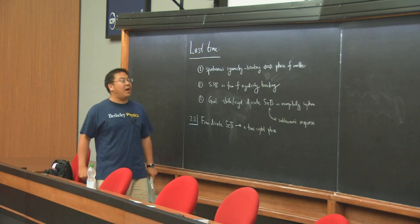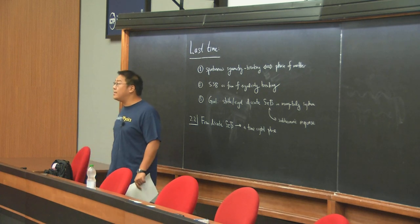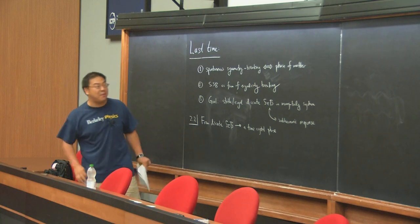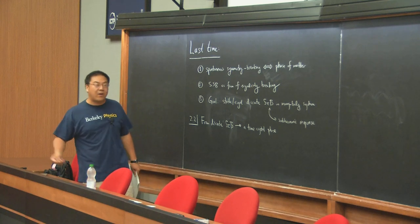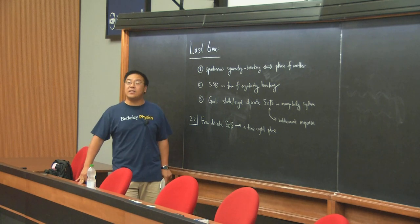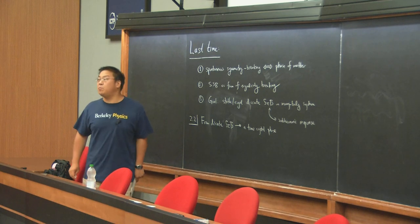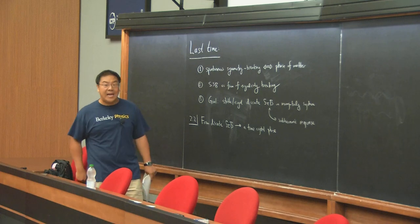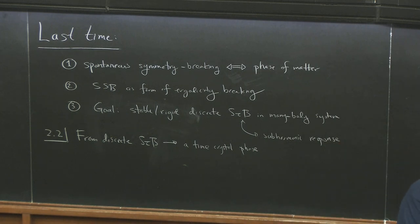Just a little bit of a recap. Last time I started trying to make sure that everyone is on the same page. I introduced the language of spontaneous symmetry breaking as the essence of what defines a phase of matter, and I emphasized the picture of thinking about spontaneous symmetry breaking or the stability of a phase of matter as a form of ergodicity breaking. You need to remember which of the two states of the ferromagnet you're in if you want to be a stable ferromagnet.